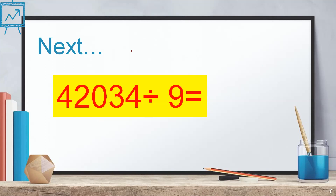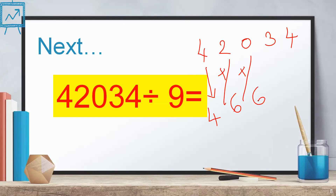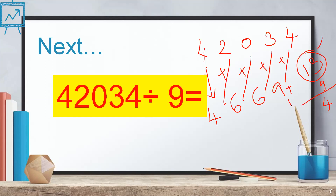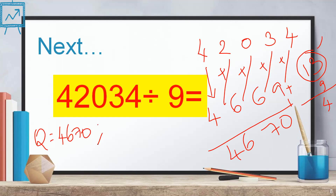We'll do another example: 42034 divided by nine. Write the digits: four, two, zero, three, and four. Write four as the first digit. Four plus two is six, six plus zero is six, six plus three is nine, nine plus four is thirteen. Thirteen is greater than nine, so subtract nine from thirteen — thirteen minus nine is four. You subtracted one nine, so add one to the quotient digits. This gives you quotient 4,670 and remainder four.